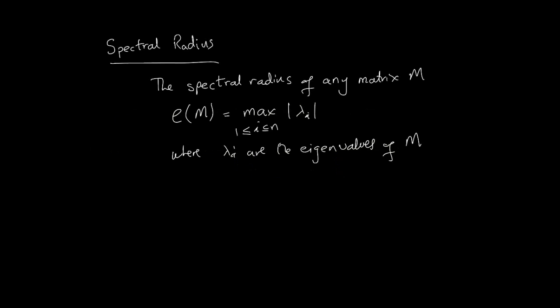Let's talk about this concept of the spectral radius, something you might have studied in linear algebra. The spectral radius of any matrix M is denoted by the Greek letter rho of M, and it is the maximum absolute eigenvalue of that matrix M. So in other words, if lambda_i were all the eigenvalues of M, then irrespective of sign, we would take the largest magnitude eigenvalue — that would be known as the spectral radius.